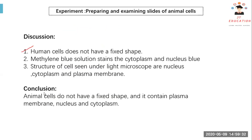Human cheek cell — we can see it has no fixed shape. Methylene blue solution stains the cytoplasm and nucleus blue. The structure seen under the light microscope is the nucleus, cytoplasm, and plasma membrane only. Animal cells have no cell wall, no chloroplast, and no vacuole — or if there is a vacuole, it's very small.